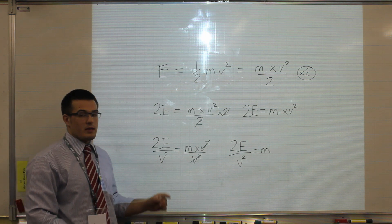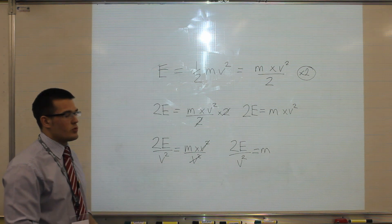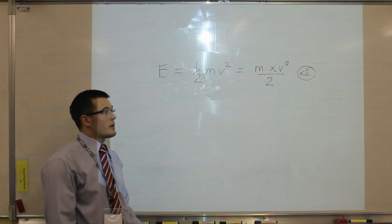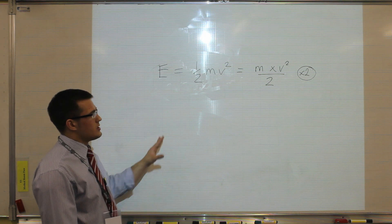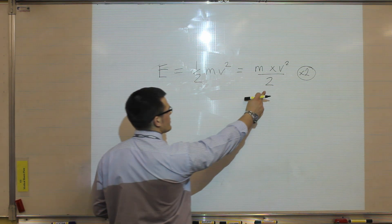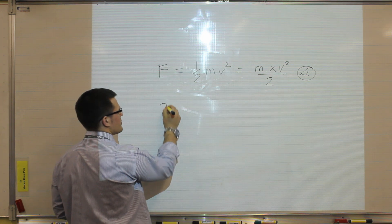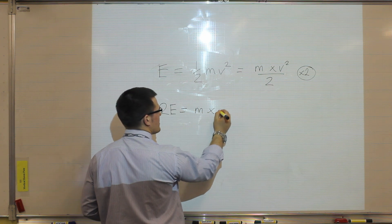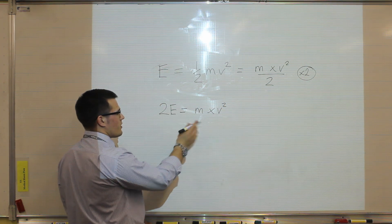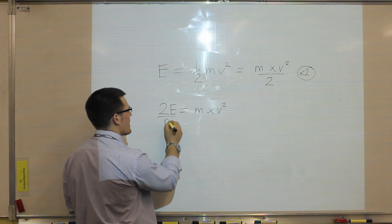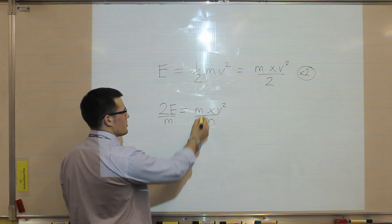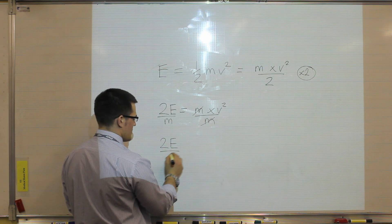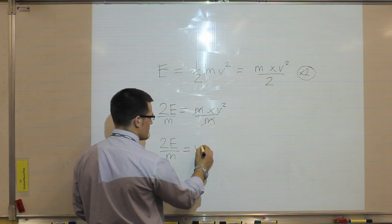Now, if we want to make velocity the subject of the equation, that's a little bit more difficult. So let's go back to this equation. We need to do the same first steps: multiply by two again, so we have 2E is equal to the mass multiplied by velocity squared. But this time we will divide both sides by the mass, so mass will cancel, and we'll be left with 2E over M is equal to velocity squared.